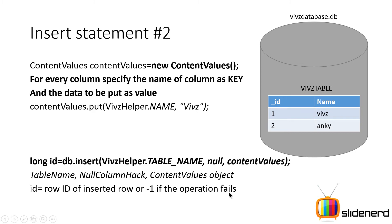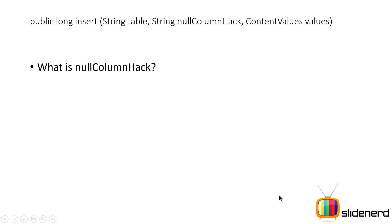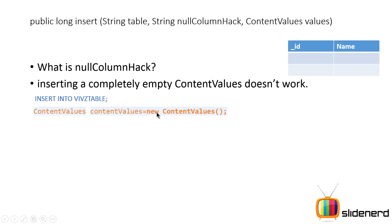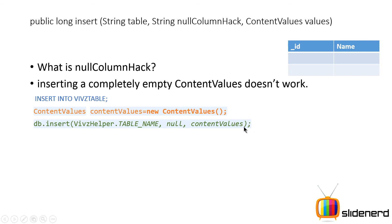The db.insert() method returns a long — specifically the ID of the inserted row, or minus one if the operation fails. It's a long because you could potentially have millions of records, even if that's rare on a mobile device. Now let's understand the second parameter, the null column hack. Inserting a completely empty ContentValues object doesn't work in Android. If you create a new ContentValues with nothing in it and call db.insert() with null as the second parameter, trying to insert a blank row will fail.